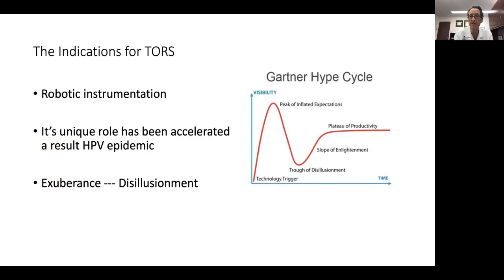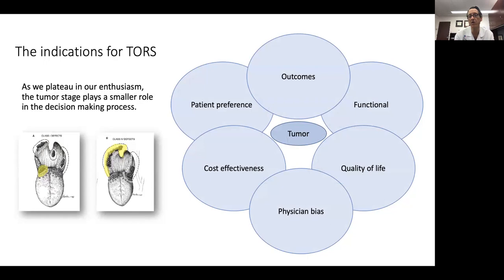Somewhere between the exuberance of robotics and the disillusionment we've faced in trying to apply it, we've come to a middle ground. We traditionally look at a tumor and ask ourselves: if I do surgery or radiation, what are the oncological and functional outcomes going to be? How am I going to impact their quality of life? What are my biases? There are tumors involving different structures that I feel confident I can remove and I may have a bias, but not everybody feels that way. So there are individual physician and surgeon impacts.